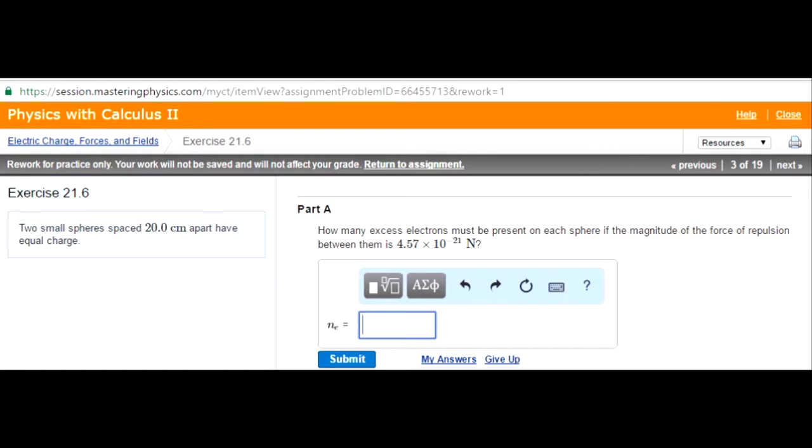The problem states, two small spheres spaced 20 centimeters apart have equal charge. How many excess electrons must be present on each sphere if the magnitude of the force of repulsion between them is 4.57 times 10 to the negative 21 newtons.